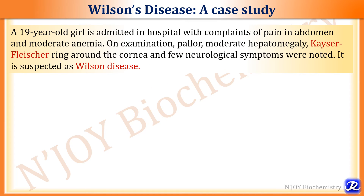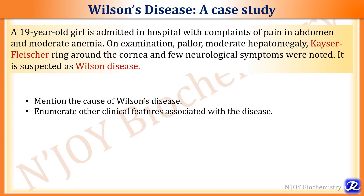Let's revise Wilson's disease by answering the case study questions. The cause of Wilson's disease is mutation in the ATP7B gene. Clinical features are based on the organs affected: if the liver is affected — hepatomegaly, hepatitis, cirrhosis; if the brain is affected — behavioral changes, dystonia, dysarthria, incoordination, tremors, mask-like facies.